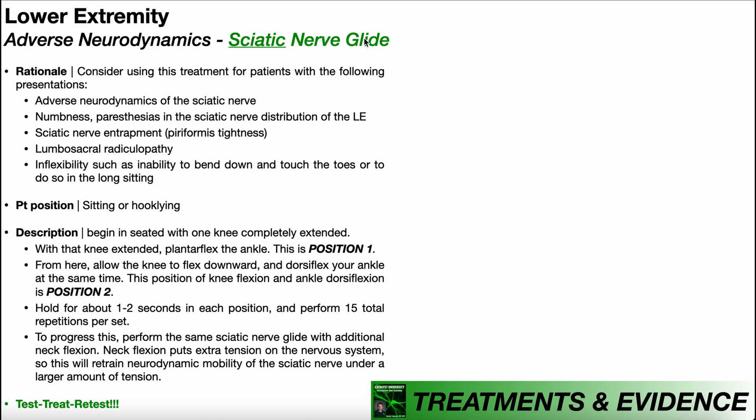You should consider giving a sciatic nerve glide to any patient that presents with the following. Number one: adverse neurodynamics of the sciatic nerve. In the upper extremity, we had upper limb tension tests, and when those were positive, it implied adverse neurodynamics of a specific nerve. Here we don't have lower limb tension tests, but we do have special tests like the straight leg raise test and Braggart sign. When these are positive, it can imply adverse neurodynamics of the sciatic nerve, for which you should give this nerve glide.